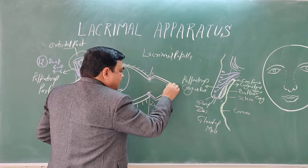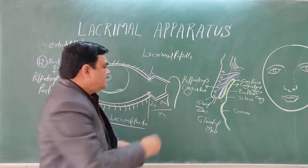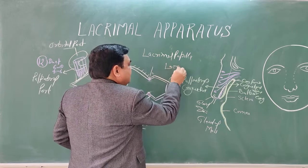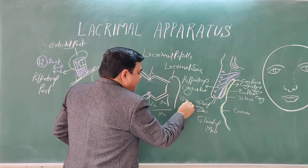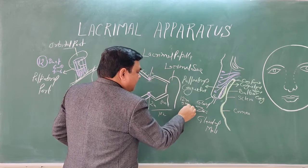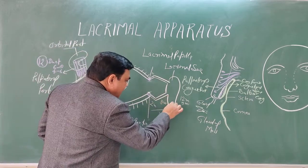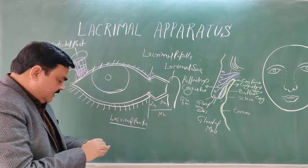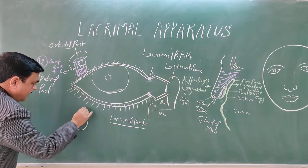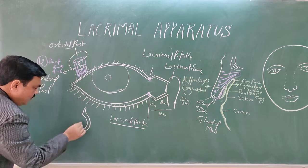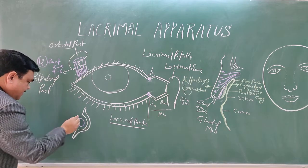The canaliculus opens into the lacrimal sac. The length of the lacrimal sac is about 12 millimeters and the transverse diameter is about 5 millimeters. It has a fundus, a body, and a neck — this constricted part is called the neck. The lacrimal sac is situated in the lacrimal groove, with the lacrimal fascia covering it and the orbicularis oculi muscle surrounding it.